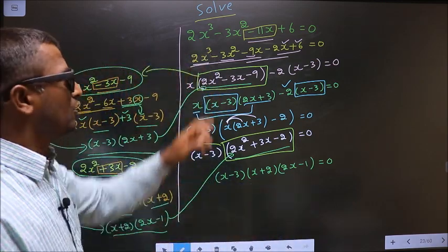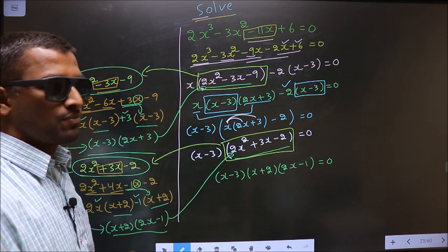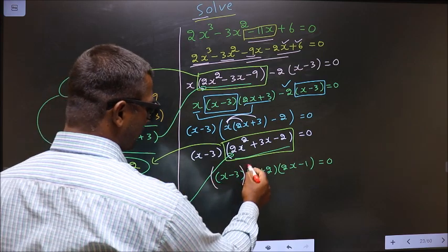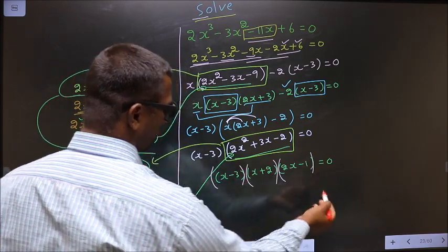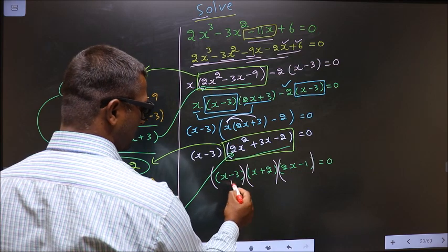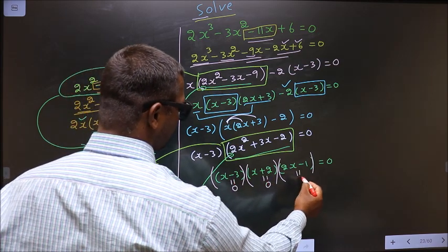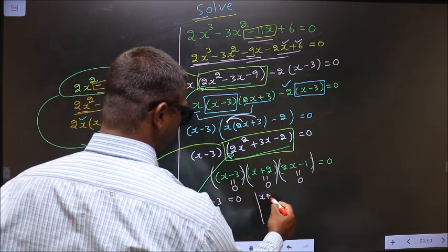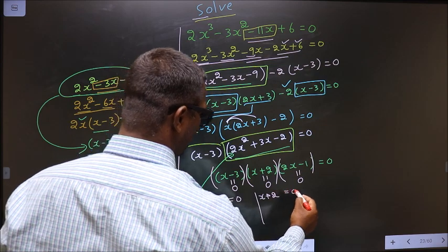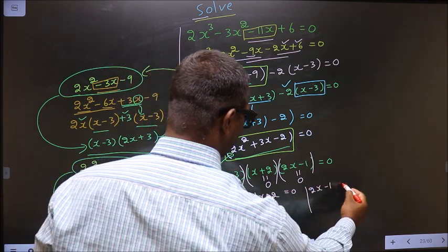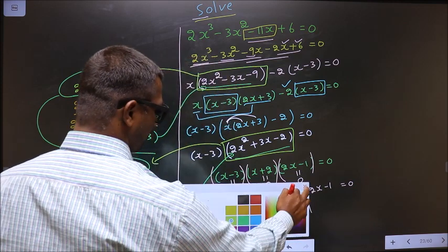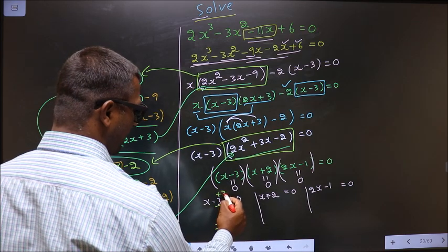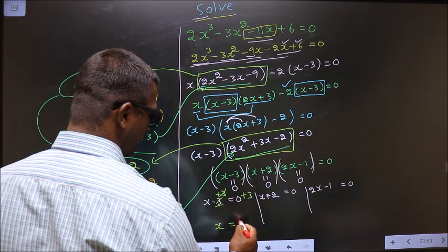Now they told you to solve, so you should find the values for x. Here we got a product of brackets equal to 0, so to get x values we should equate each bracket to 0. That is x minus 3 = 0, x plus 2 = 0, and 2x minus 1 = 0. To get x here I should remove minus 3, so I add 3, giving x = 3.